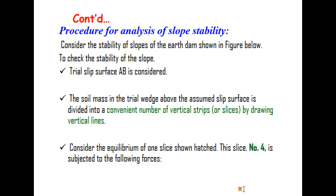The soil mass in the trial wedge above the assumed slip surface is divided into a convenient number of vertical stripes or slices by drawing vertical lines. Consider the equilibrium of one slice shown hatched. This slice number 4 is subject to the following forces. Here, let's see the image.